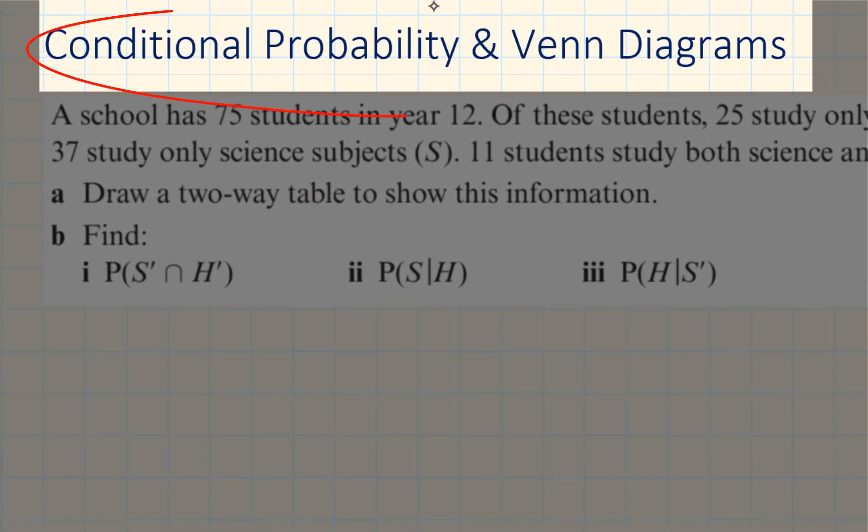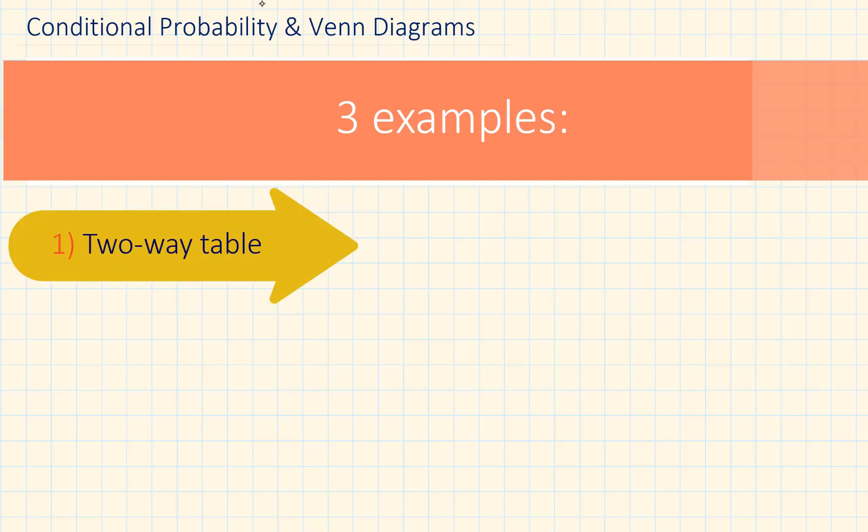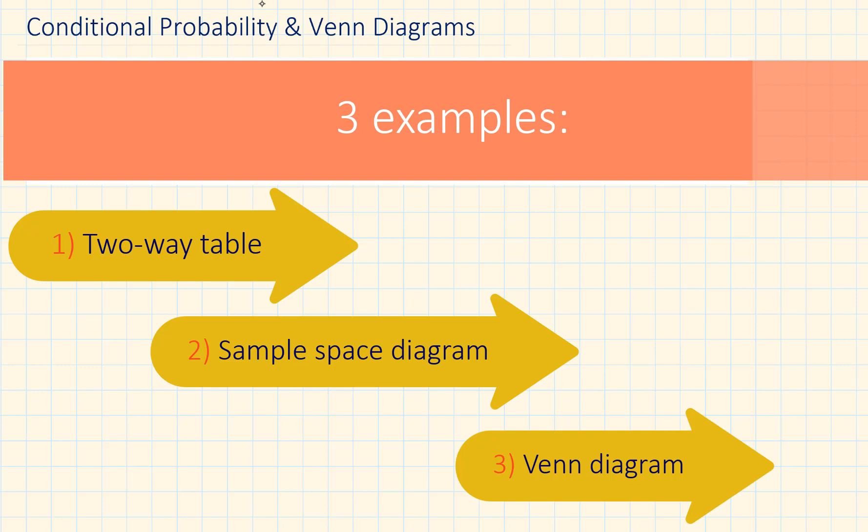Conditional probability and Venn diagrams. In the first example we will draw a two-way table to solve problems. The second example will cover a sample space diagram and in the third example we will learn how to solve more complex conditional probability questions using a Venn diagram.